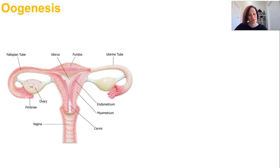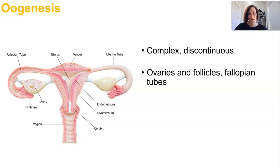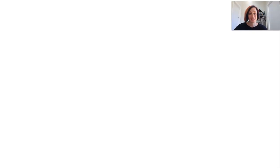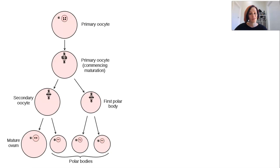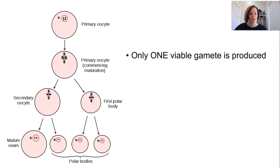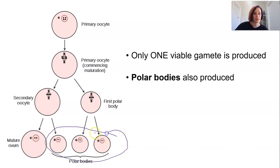Oogenesis, on the other hand, is not your default base-level meiosis. It's a really complex process with stops and starts — not continuous at all — and has many contributing players. It mainly happens within the ovaries but continues all the way up until the moment of fertilization, usually in the fallopian tubes. Although the basic stages of meiosis still occur in oogenesis, only one viable gamete is produced at the end.